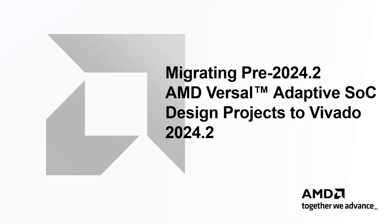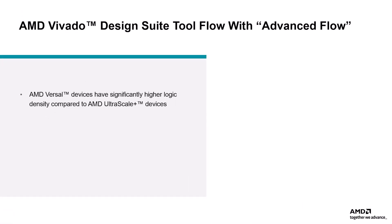Hello, and welcome to the Migrating Pre-2024.2 Versal Design Projects to Vivado 2024.2 Quick Take Video. In this video, we will introduce the new Advanced Flow feature of Vivado 2024.2 version. We will also learn how to migrate your AMD Versal project to Vivado 2024.2 for reduced compilation time and congestion compared to older versions. AMD Versal heterogeneous architecture features significantly increased logic density, resulting in enhanced performance and greater capacity compared to previous generation.